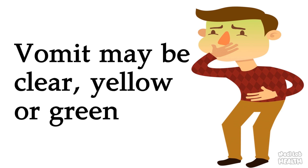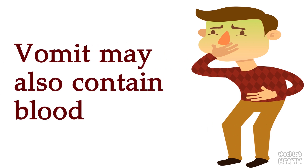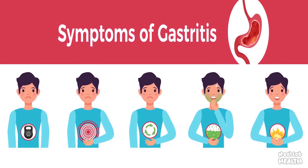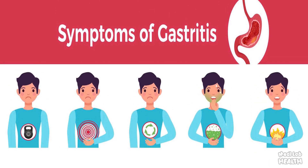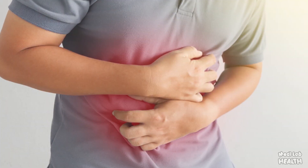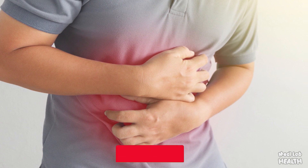In cases of gastritis involving vomiting, the appearance of the vomit may be clear, yellow, or green. During chronic gastritis, vomit may also contain blood. Other symptoms of severe gastritis include shortness of breath, chest pain, severe stomach pain, and foul-smelling bowel movements.